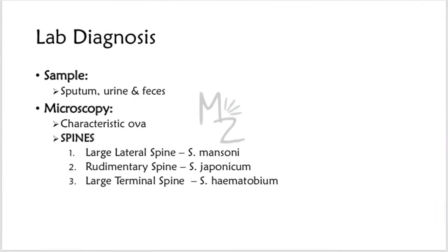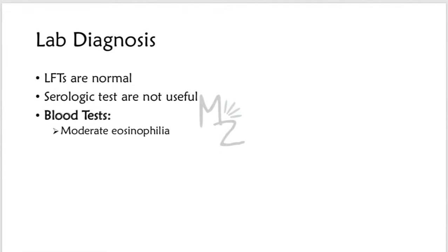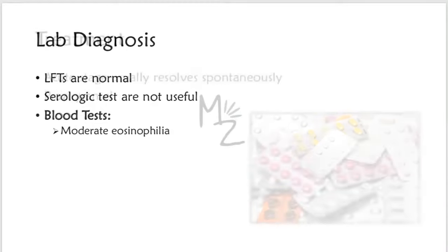For lab diagnosis, samples include sputum, urine, and feces. Diagnosis depends on finding the characteristic ova in the feces or urine — the large lateral spine of S. mansoni and the terminal spine of S. haematobium are distinctive features. Liver function tests are normal. Serologic tests are not useful. Blood tests show moderate eosinophilia.